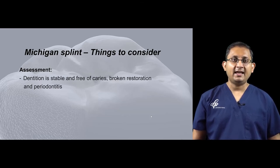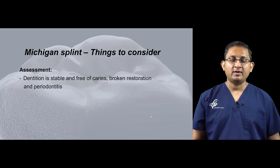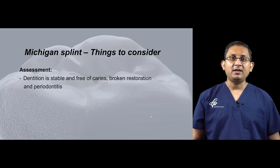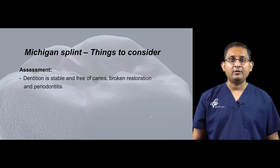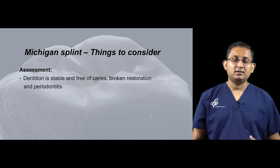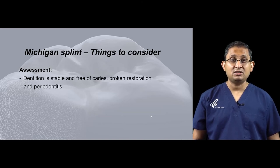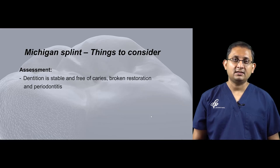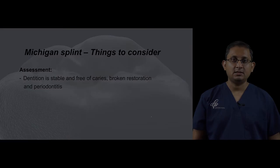You need to make sure the dentition is free of caries, broken restorations, or periodontitis. If a patient has broken teeth or active periodontal disease, you cannot properly assess the occlusion, because the teeth keep breaking and the dentition keeps changing due to perio. All teeth must be stabilized and under control before considering a Michigan splint.